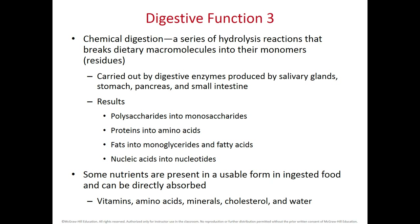Chemical digestion uses enzymes to hydrolyze different macromolecules like proteins, fats, and carbohydrates into their monomers. In the case of carbohydrates, it will be disaccharides and monosaccharides; for proteins, polypeptides or peptides; and for fats, triglycerides will be broken into a glycerol molecule and fatty acids. We have several places within the digestive system that produce enzymes, starting with the mouth, where salivary glands secrete amylase and lipase to begin breaking down carbohydrates like starch and lipids.